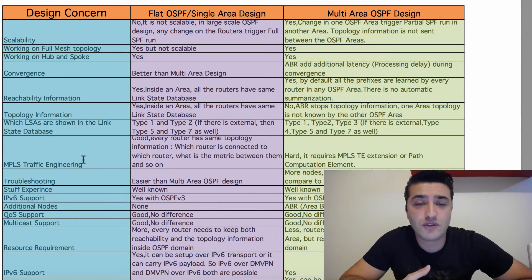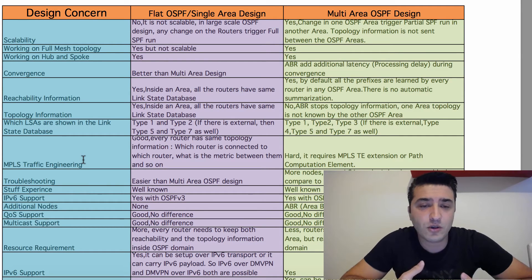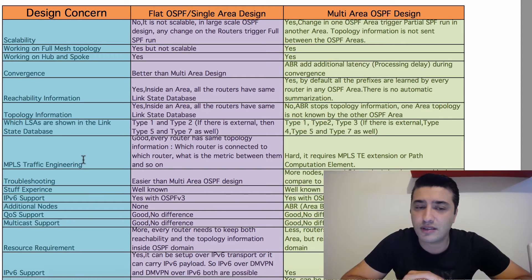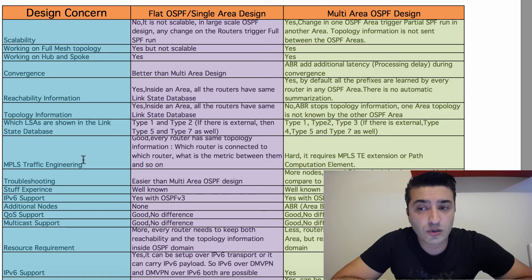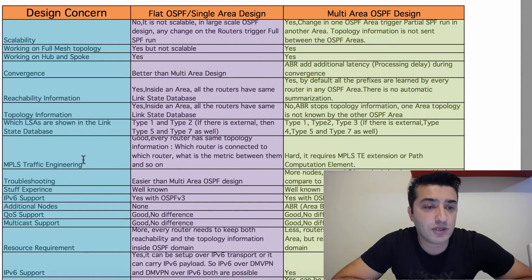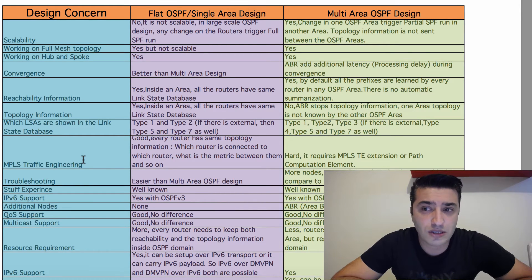Hub-and-spoke OSPF, especially at large scale, is really problematic. When recommending a routing protocol for large-scale networks with thousands of spokes or branch offices, you should use EIGRP, or if you don't want to be vendor-locked and want to use different equipment, then BGP for large-scale design. With OSPF in hub-and-spoke topology you have to tune the protocol a lot.